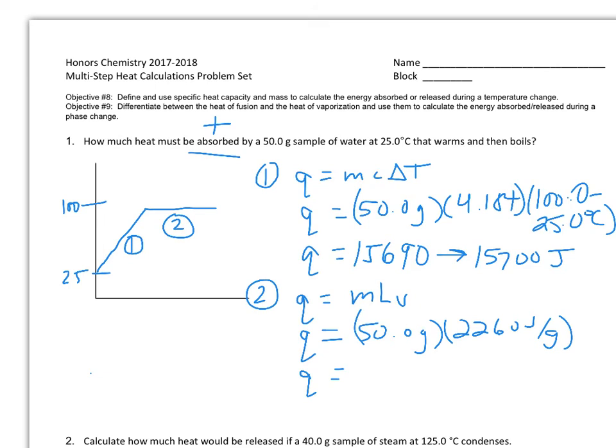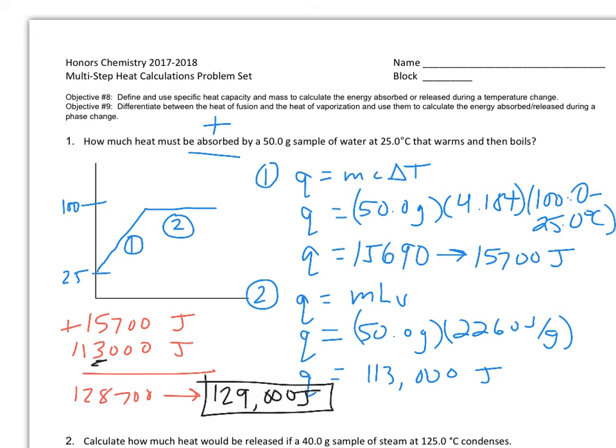Now I'm going to add the two together. I get 128,700 joules for the sum and then based on rules for sig figs, I'm going to round to the thousands place. 129,000 joules is my final answer. As predicted, my answer is positive because this is heat that is absorbed.